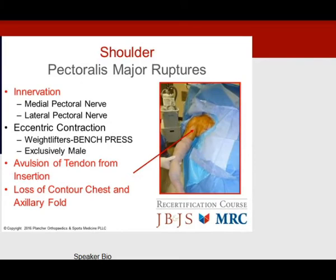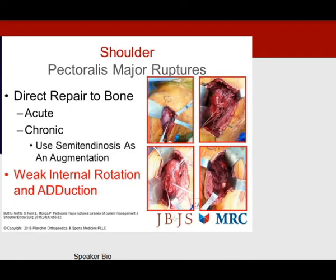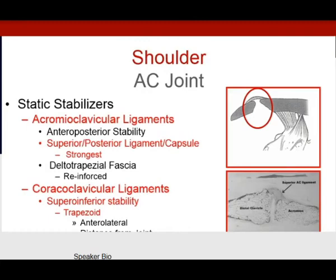Pec major rupture is innervated by the medial and lateral pectoral nerves. It always avulses from the tendon insertion. Look for loss of the chest contour and axillary fold. Direct repair to bone is the treatment; the patient will have weak internal rotation and adduction.